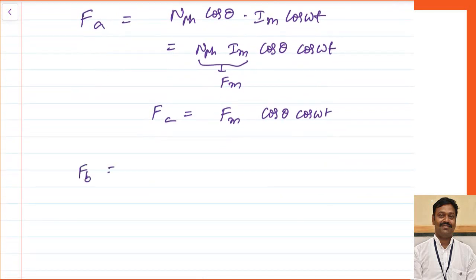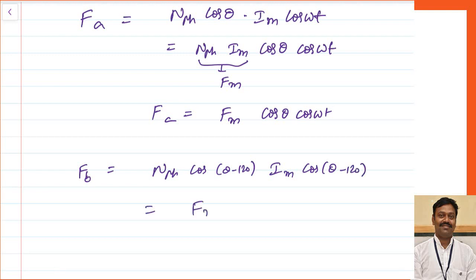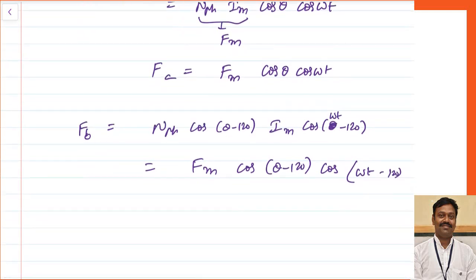Similarly for phase B: Fb = n_phase × cos(θ − 120°) × I_max × cos(ωt − 120°), which I can write as Fm × cos(θ − 120°) × cos(ωt − 120°). For phase C: Fc = Fm × cos(θ − 240°) × cos(ωt − 240°).